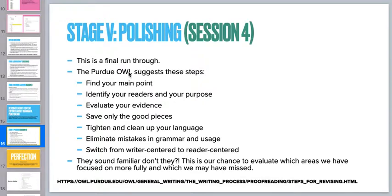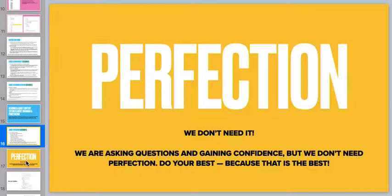Finally, we polish. If you notice these steps, they're kind of like all the stuff we already did — we're revisiting it all in one fell swoop. We're asking lots of questions, using worksheets to keep us on track, and saying, what do I see? Could I get someone else to read it? Could I use a peer edit worksheet to catch all the bits and pieces? We're not looking for perfection — we are asking questions, gaining confidence, and doing our best as we go through. Writing is something we rarely achieve perfection on. There are so many ways to do it right, to share what we are thinking and feeling and experiencing.